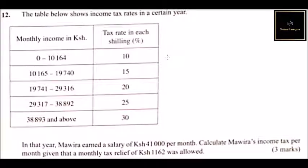We are told that in that year, Mawera earned a salary of forty-one thousand shillings per month. Calculate Mawera's income tax per month, given that a monthly tax relief of one thousand one hundred and sixty-two shillings was allowed.